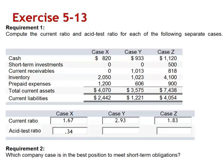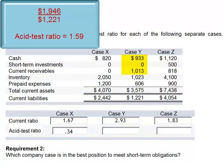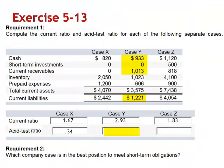Looking at case Y, the numerator is the sum of cash, short-term investments, and current receivables: $1,946, divided by current liabilities of 1,221. The acid test ratio is 1.59.